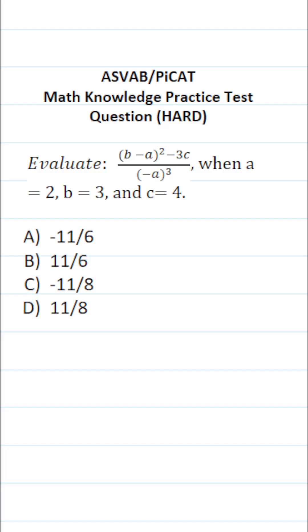This math knowledge practice test question for the ASVAB and PyCat says evaluate B minus A squared minus 3C all over negative A to the third power when A equals 2, B equals 3, and C equals 4.